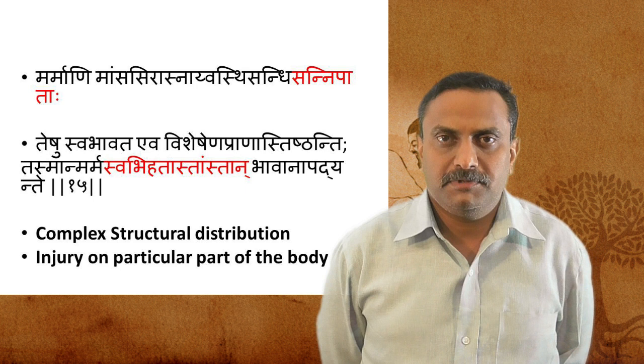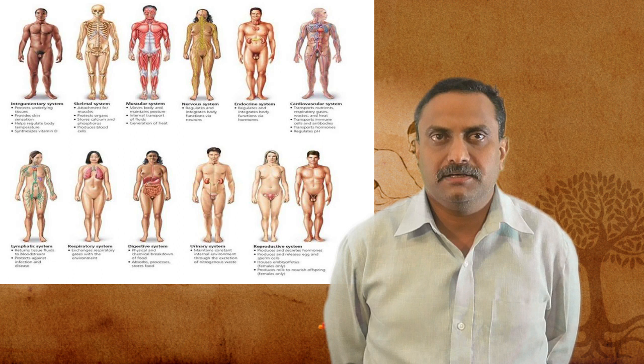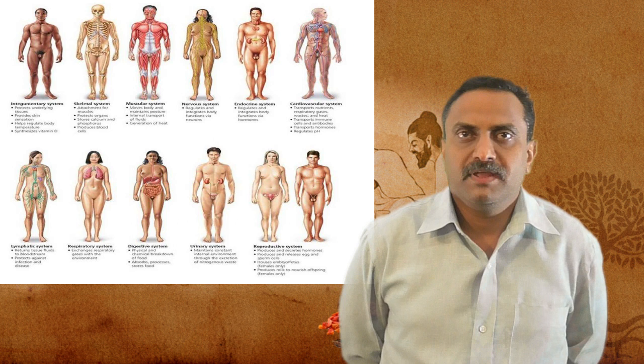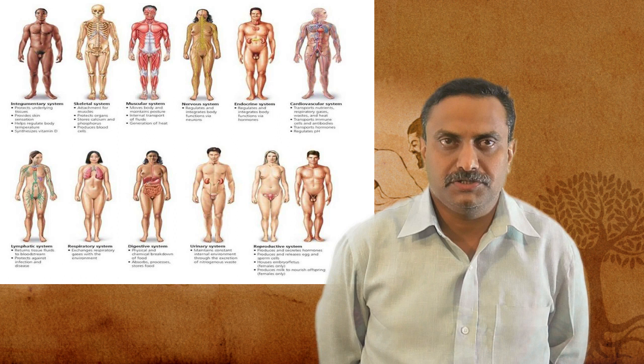The concept of Sva Abhi Hatam means the Marma concept is basically explained in terms of injury to a particular part of the body. First, the structures are arranged in a complex manner and are very close in relation to each other. If one structure is damaged, the effect is automatically seen on the other systems as well. All bodily systems — skeletal, muscular, nervous, cardiovascular, urinary — are arranged in a complex manner to maintain homeostasis.